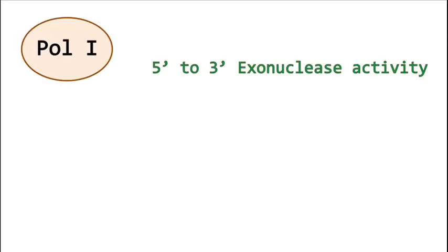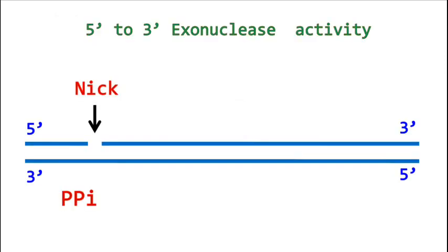The five prime to three prime exonuclease activity means the polymerase is going to remove the nucleotides in five prime to three prime direction. This occurs when the polymerase identifies small single-stranded cuts on the DNA, which are also known as nicks.